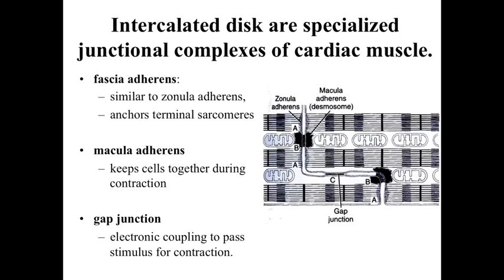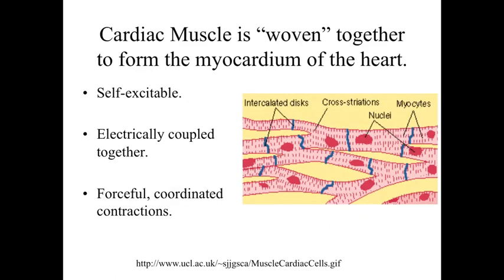In addition to the adhering connections, cardiac muscle cells also have gap junctions. These are important for electrically coupling the cells, allowing ions to flow very rapidly so that we can spread the contraction signal quickly and allow for coordinated contraction of cardiac muscle. The cells still have that cross-striation pattern because the sarcomeres are lined up in an almost crystalline repeated structure. The cells are hooked together with intercalated discs and electrically coupled through gap junctions to send a signal rapidly along the muscle cells, allowing for forceful coordinated contraction.